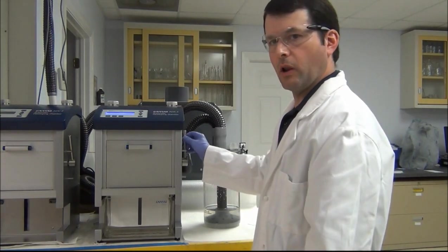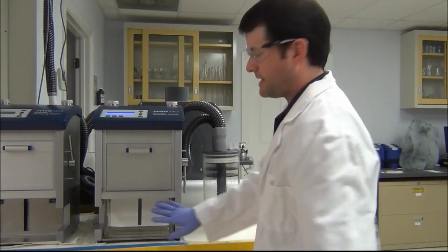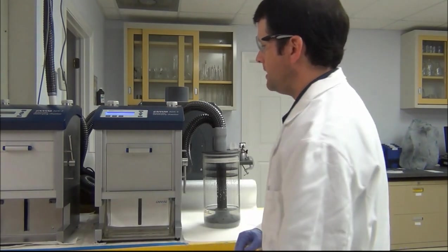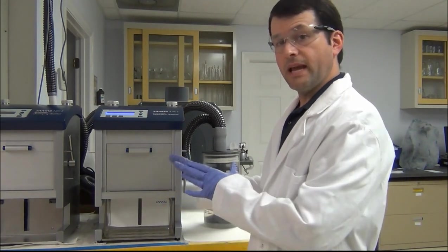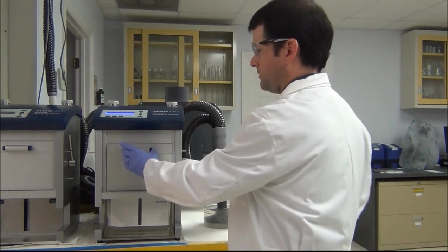There's a lever on the side. We're going to lower this down on top of the glass chamber to seal it. Now we need to put the plate into the ADC2. So we open the front door.